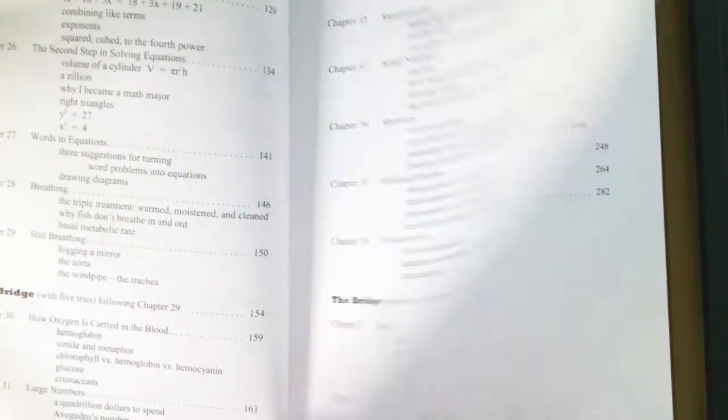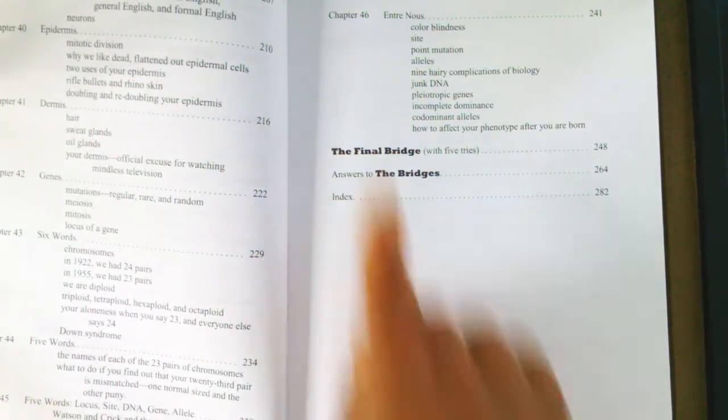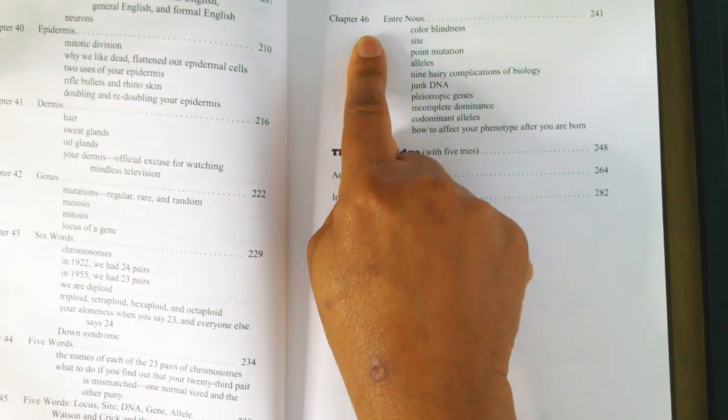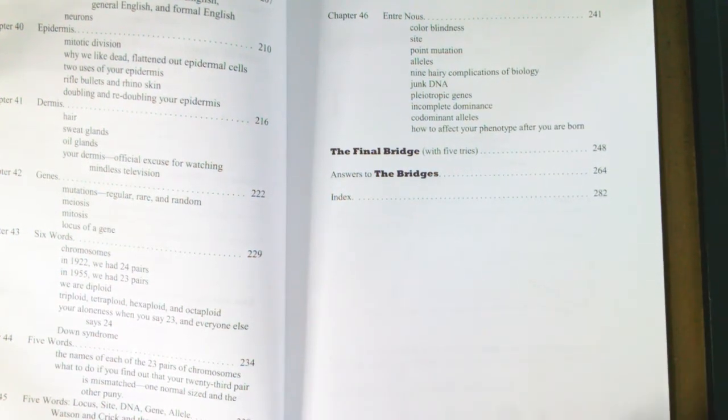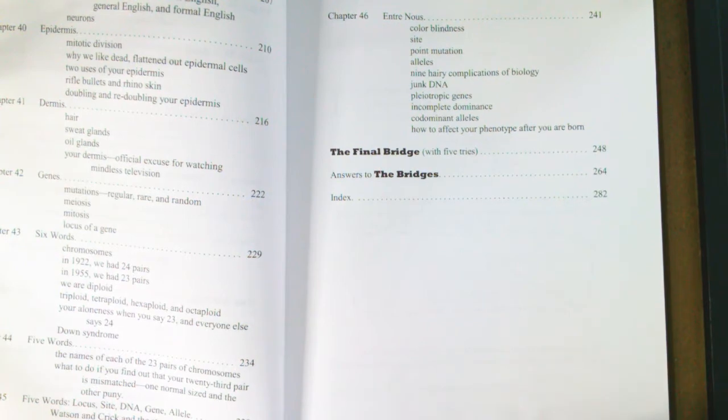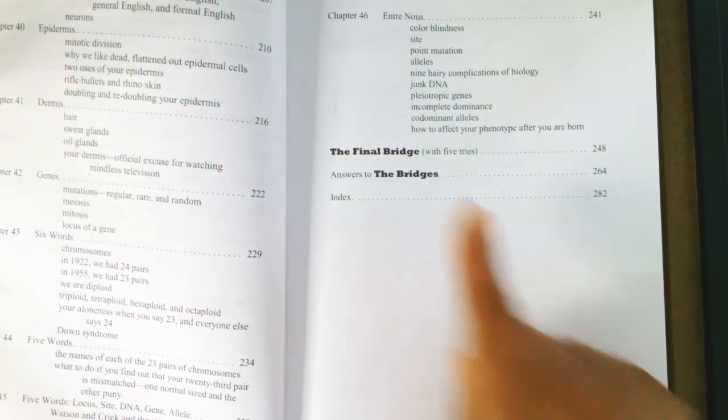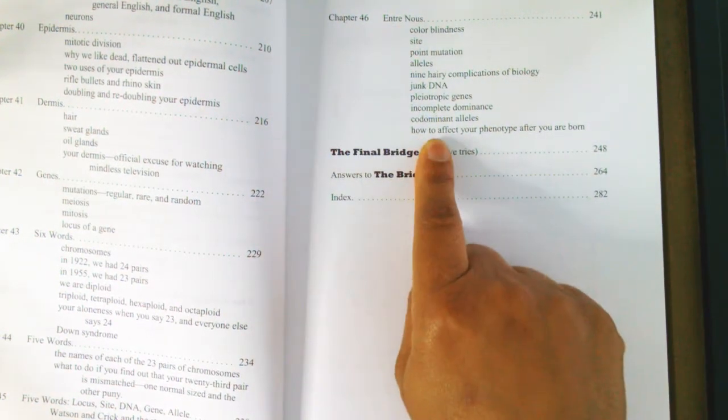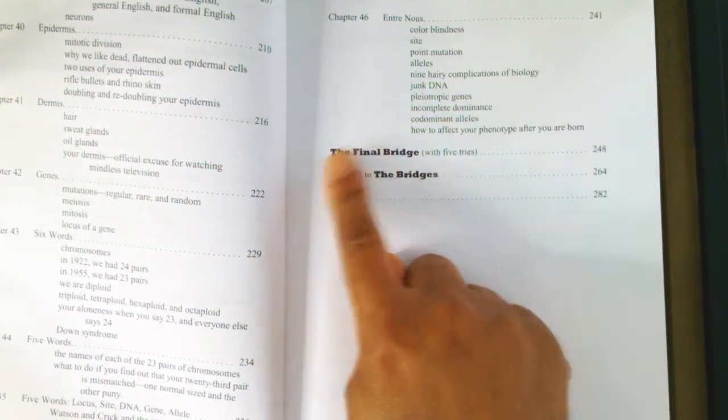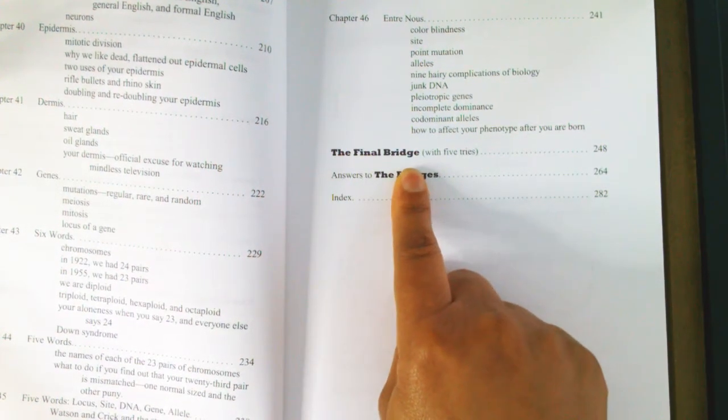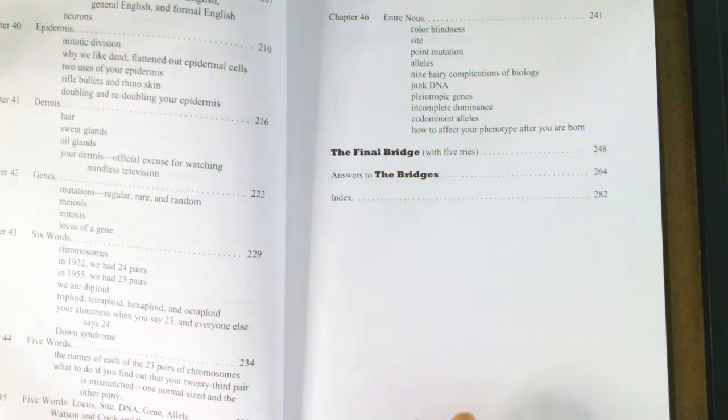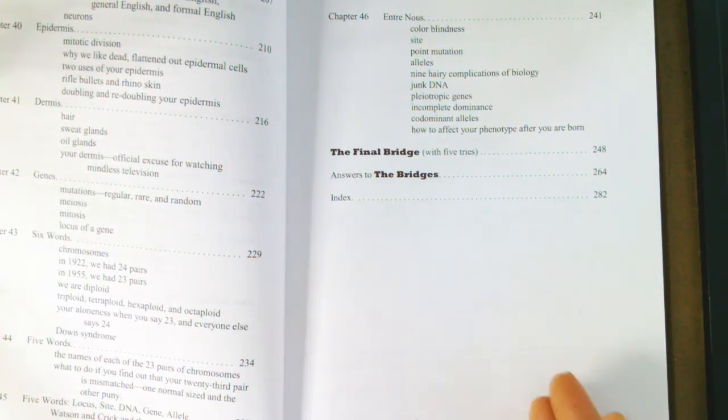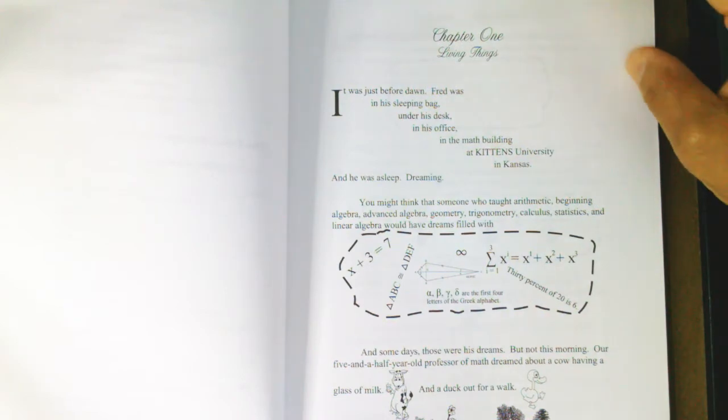There are a total of 46 chapters in this one book. In the second book, I believe it's the same amount of chapters. At the end of this main chapter, the final chapter, you have the Final Bridge, and that is testing the knowledge of everything that you've learned or they've learned.